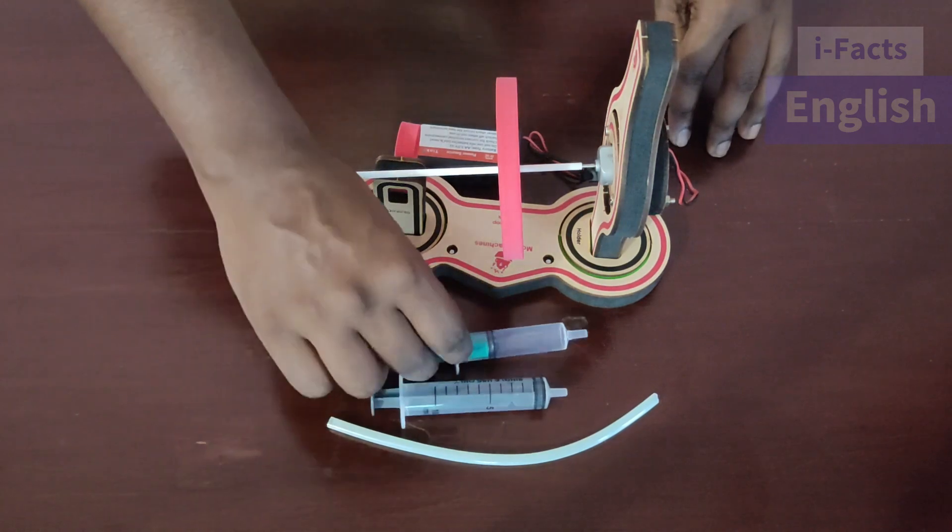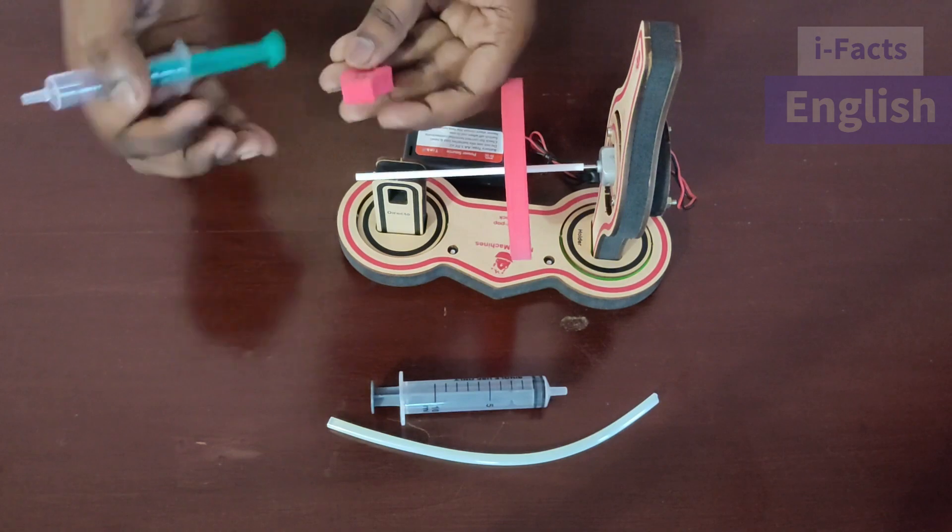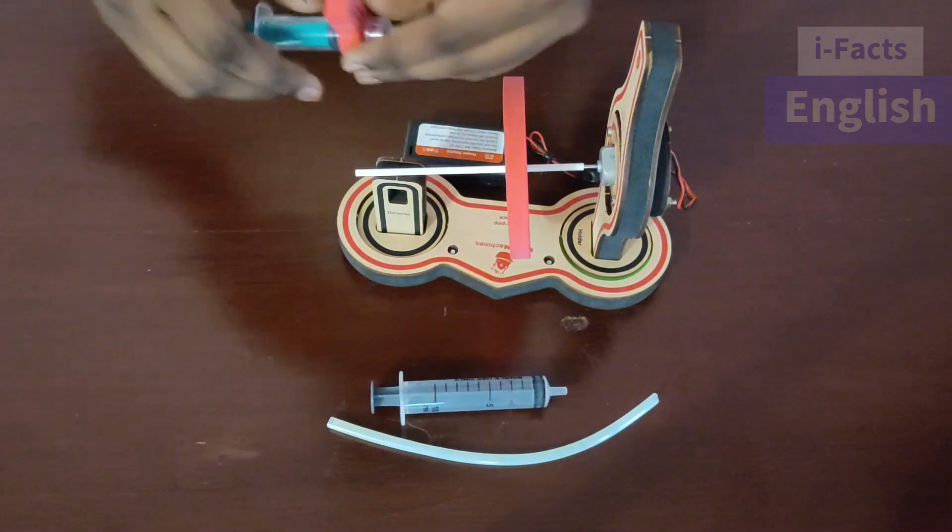Once you switch on the battery, the motor will rotate and the wheel will also be rotating. We are placing a small syringe in one of the holders.